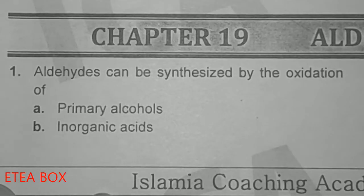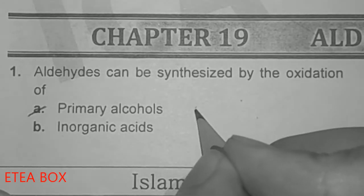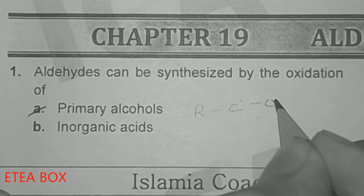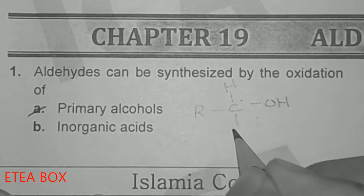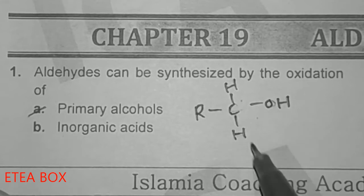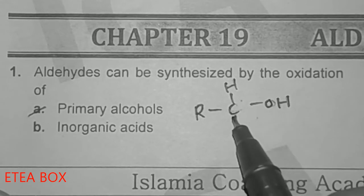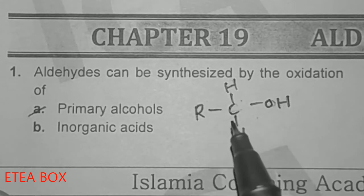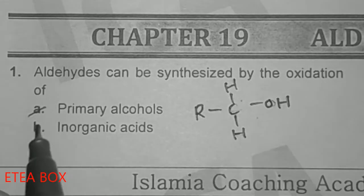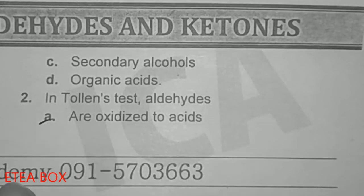Assalamu alaikum students, today we will solve the MCQs of Chapter 19: Aldehydes and Ketones. The first MCQ is: aldehyde can be synthesized by the oxidation of primary alcohol. When a primary alcohol (C-OH) undergoes oxidation, the hydroxyl group's hydrogen is removed and oxygen is attached through a double bond with carbon, giving aldehydes.